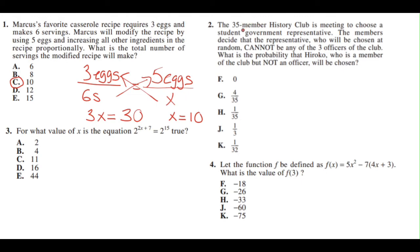The total pool of students who qualify to become a government representative are the 35 members minus the 3 officers. That provides a total of 32. So the probability if the person is chosen at random is just 1 out of the total number of people, which is 32. And that's going to be answer choice K.